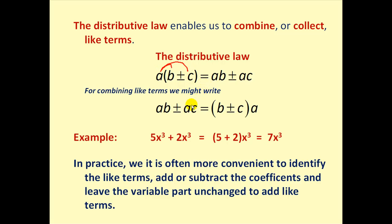However, for combining like terms, it's often helpful to write this in the opposite order. So that we have AB plus or minus AC is equal to the quantity B plus or minus C times A. Notice both terms have a factor of A, which we can factor out.